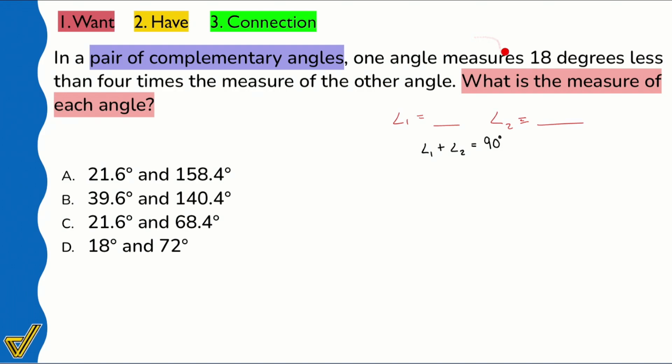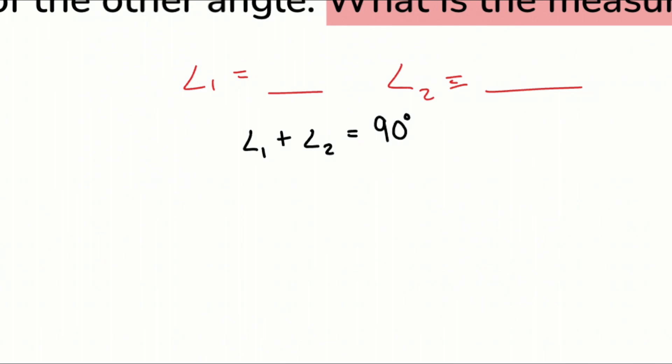And it says one angle measures 18 degrees less than four times the measure of the other. Okay. What does that mean? Well, to do this, I'm going to go ahead and just mark angle one as, you know, let's just go ahead and say X. I'm just going to say X. So if I marked angle one as X, what is the second angle going to be?